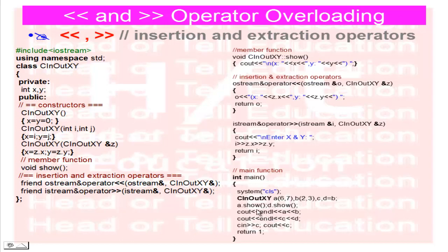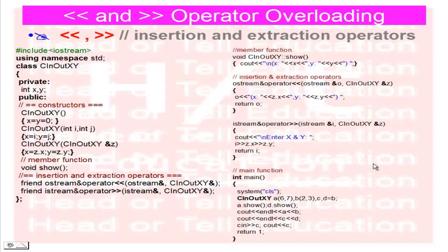Now we print using our overloaded extraction operator: cout << endl << a << b. You can see that a and b are objects of class CInOutXY — a custom class, not a standard data type. But by using the overloaded extraction operator we can use them like a standard data type. Similarly, cin >> c is used for input, and cout << c for output. This is the operator overloading of insertion and extraction operators in C++.